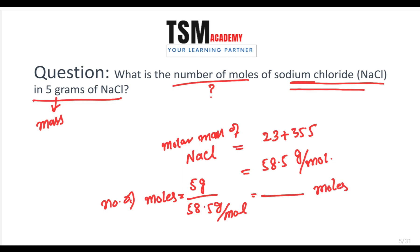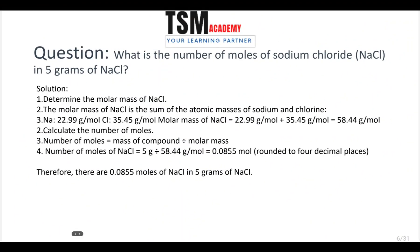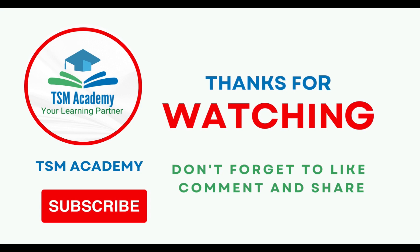Here are the solution steps: First, calculate molar mass of sodium chloride — sodium plus chlorine — which equals 58.5 g/mol. Then apply the formula: number of moles = mass of compound ÷ molar mass. Substituting the values: 5 ÷ 58.5 = 0.0855 moles. So the number of moles of NaCl in 5 grams is approximately 0.0855 moles. Given the mass, you can find the number of moles.